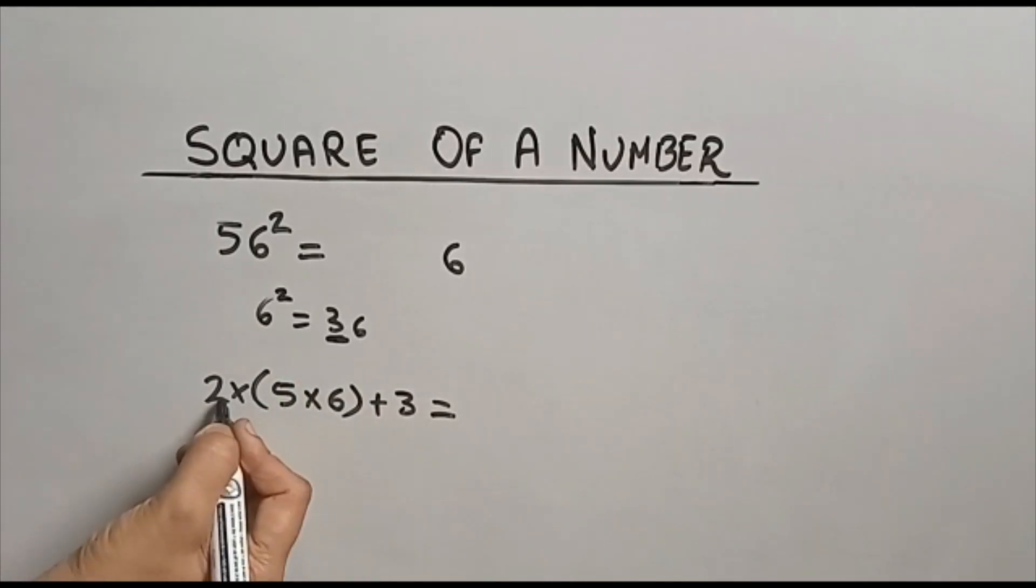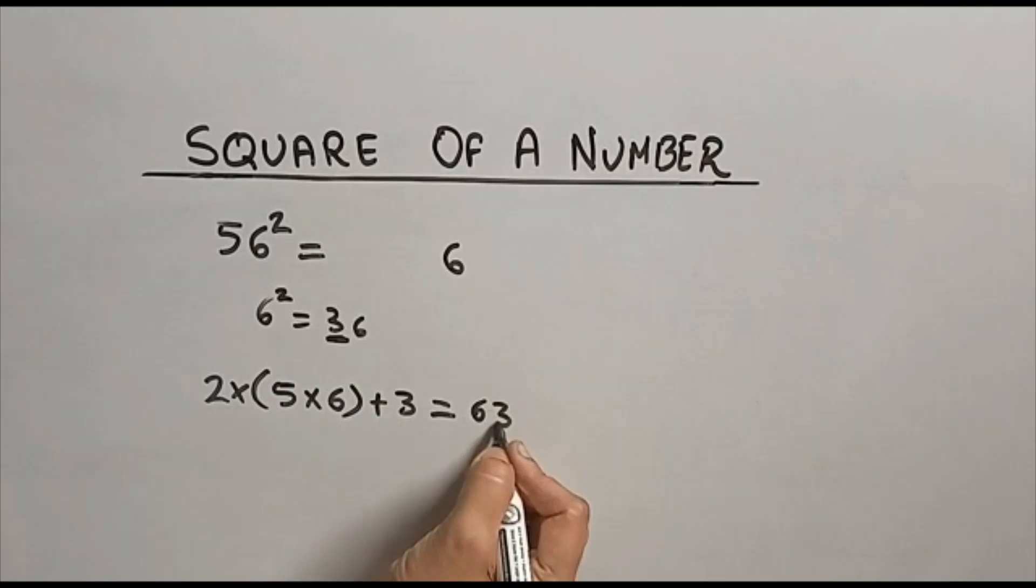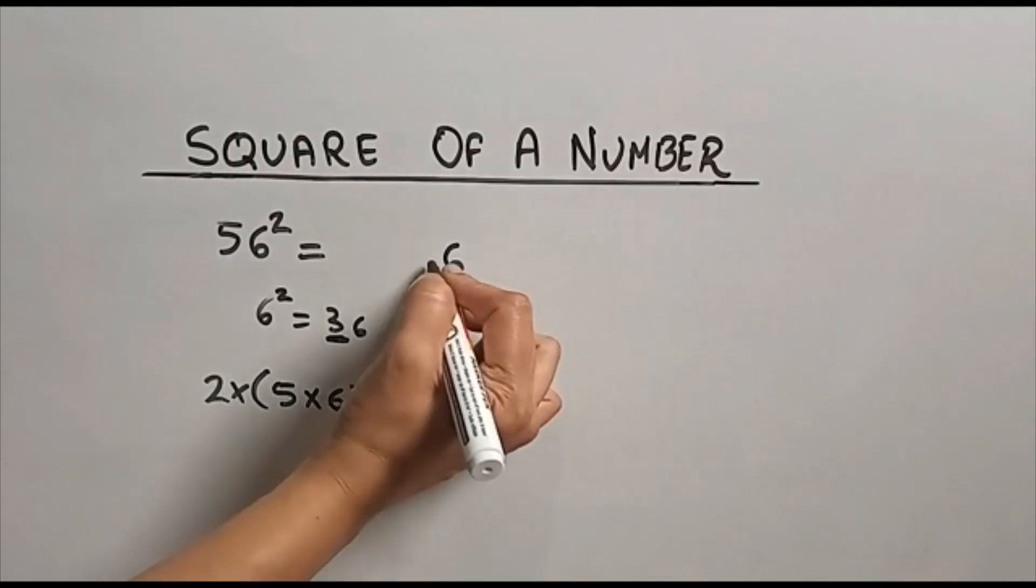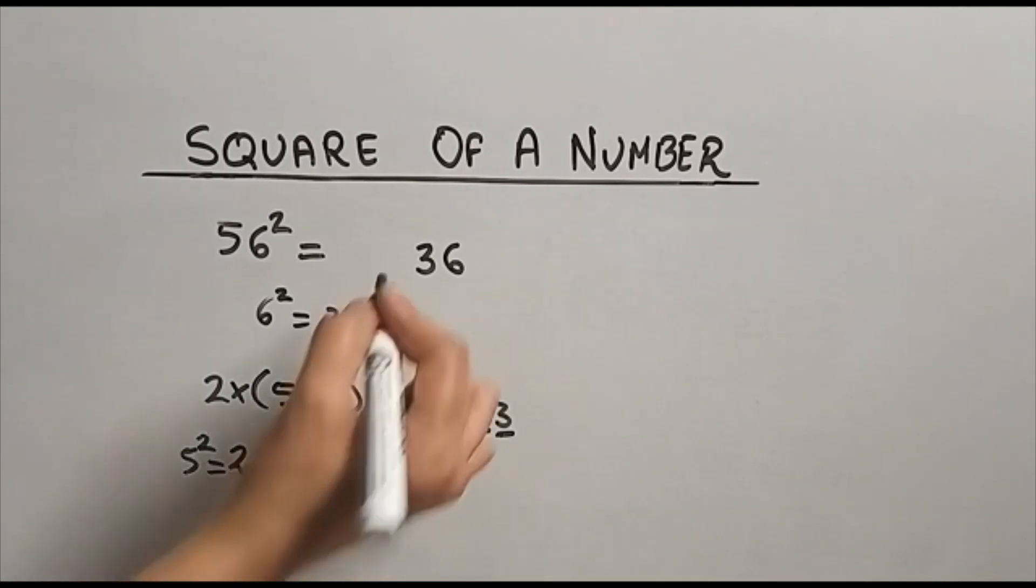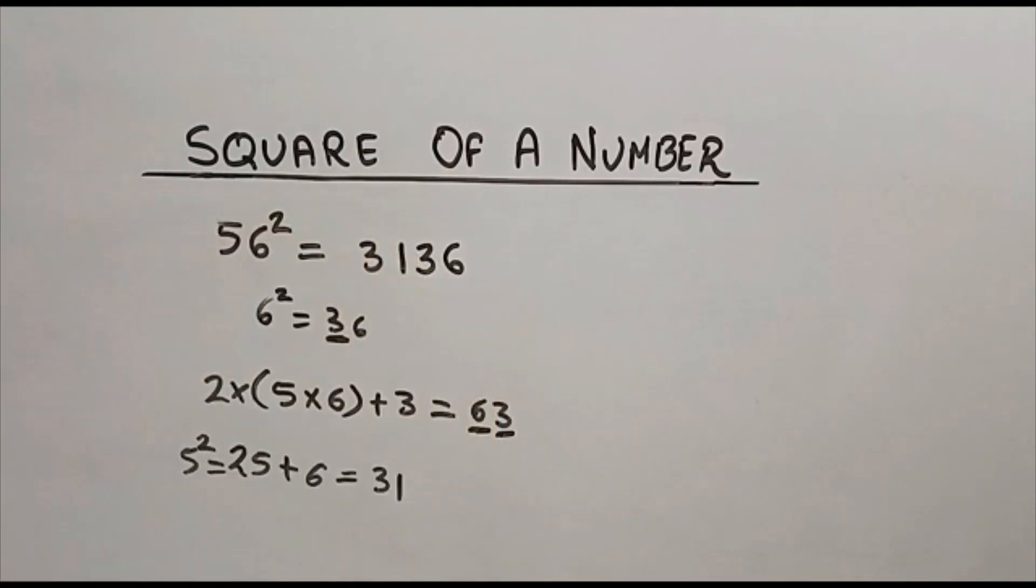Now at this 5, 5×6 is 30, times 2 is 60, 60 plus 3 is 63. Again, this 3 I am going to write here. So this 6, again square of this 5: 25 plus this 6 is 31. This is the square of 56.